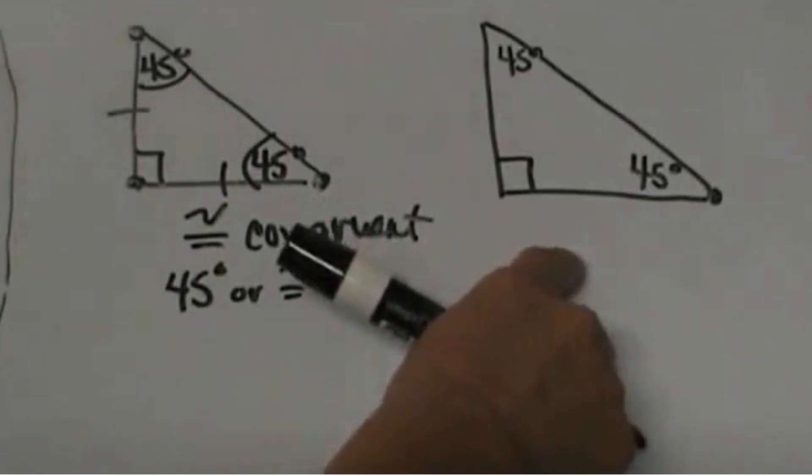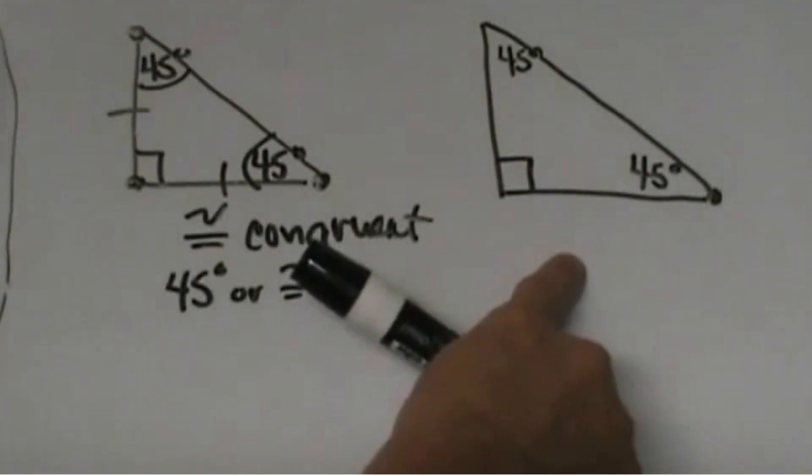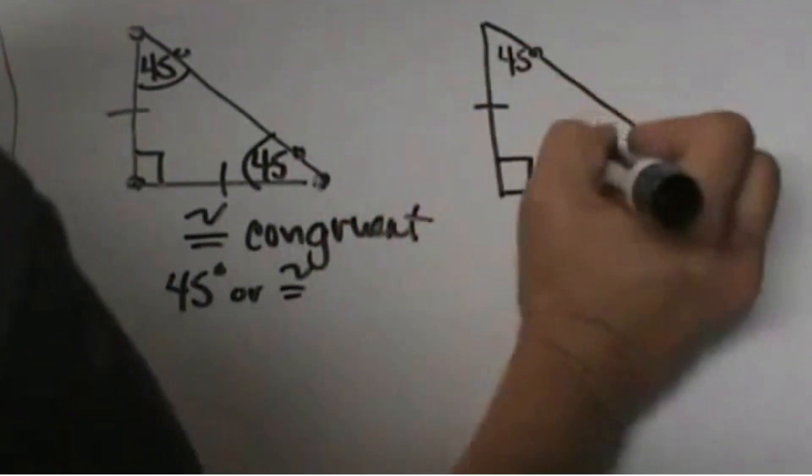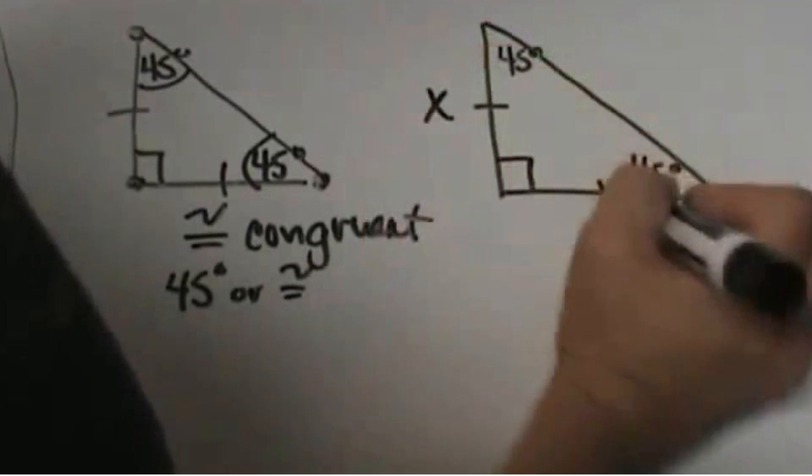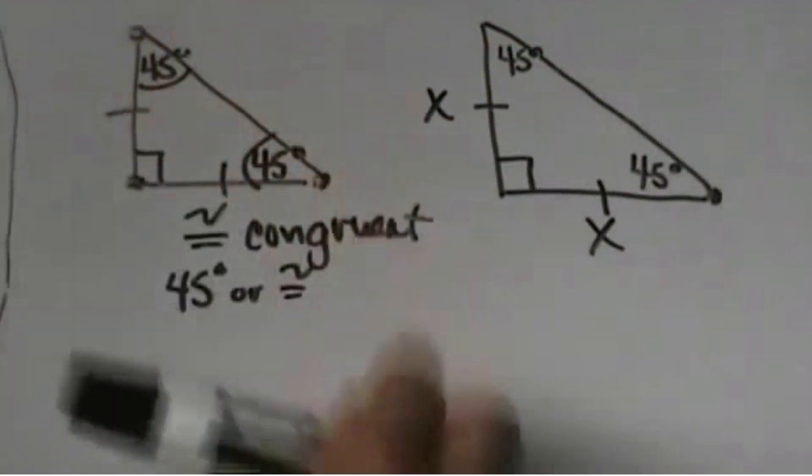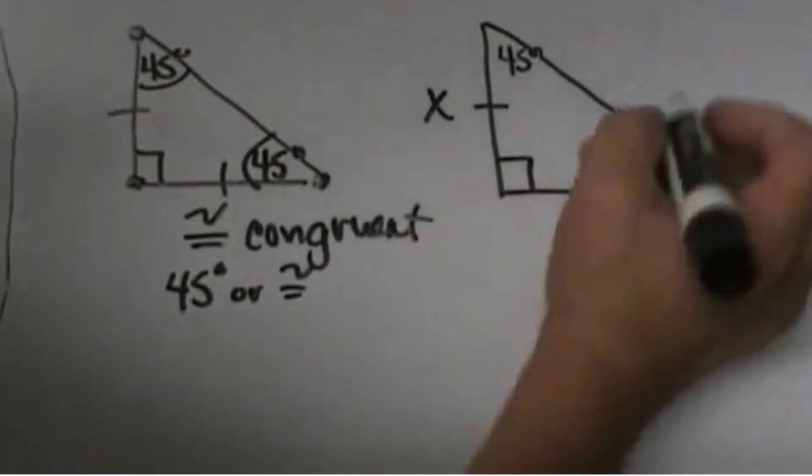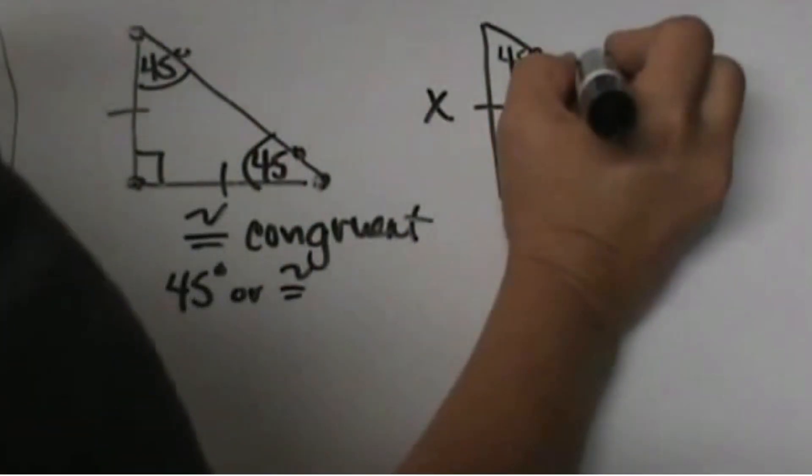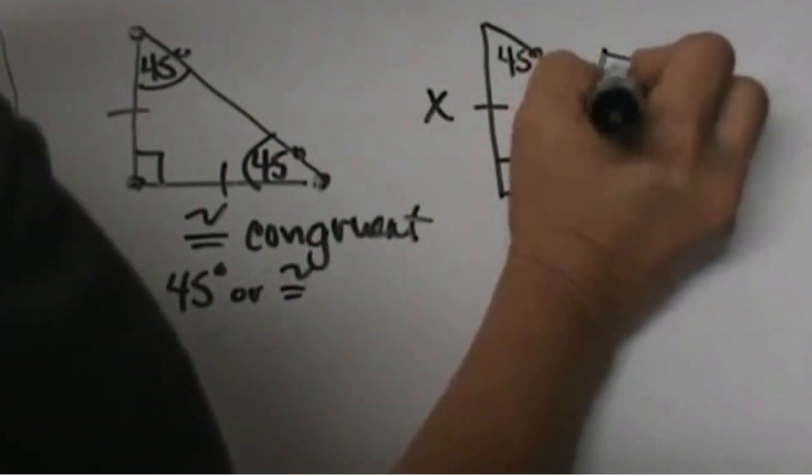Now let's use this triangle over here for our patterns. We are going to label both of the legs x and x. We are going to label the hypotenuse with this rule. This rule is always true. It is going to be x times the square root of 2.